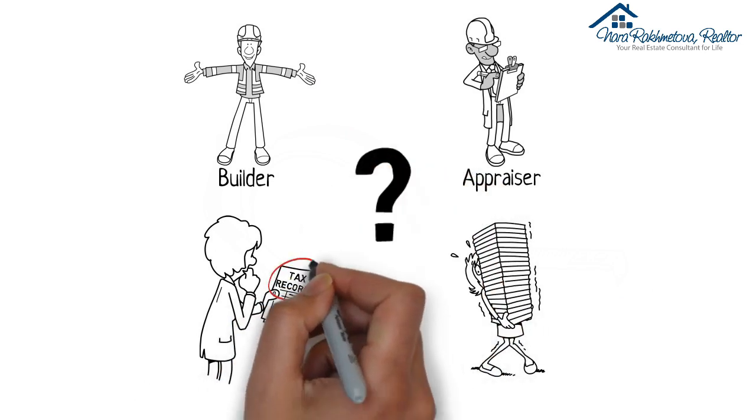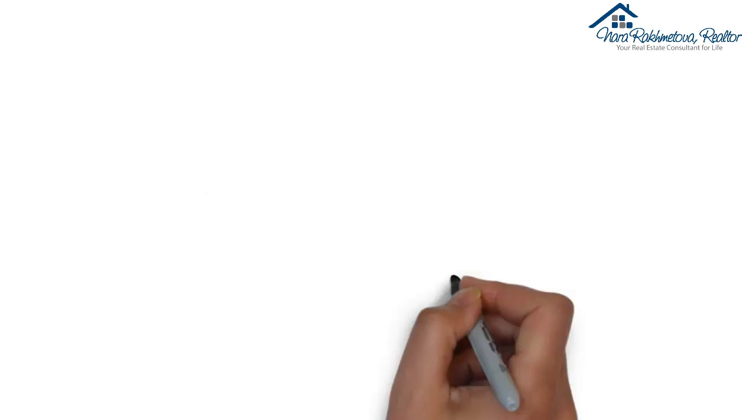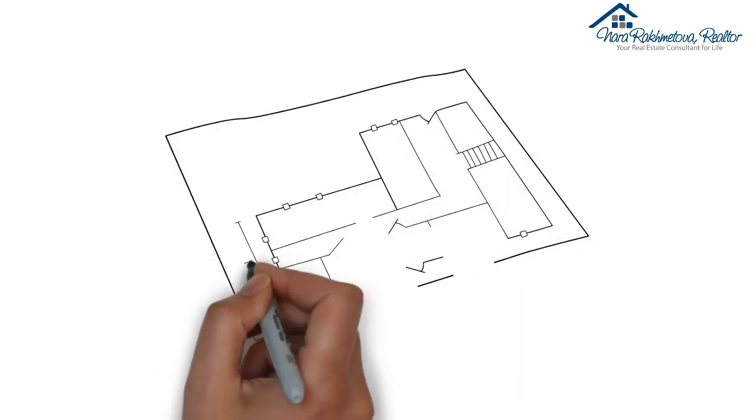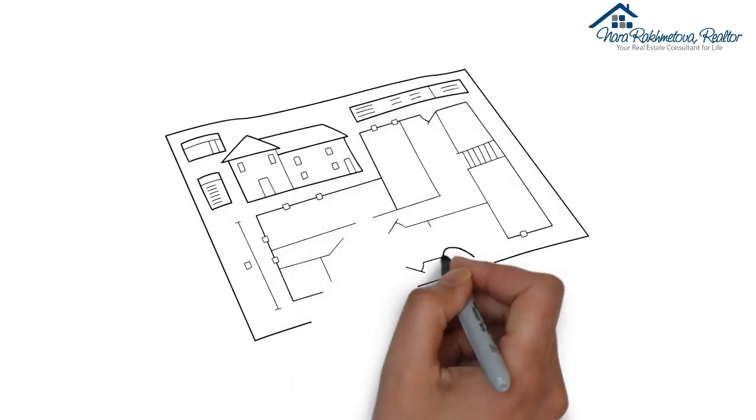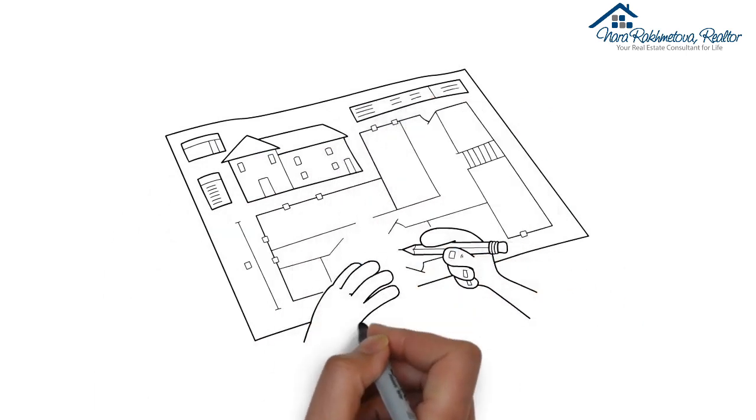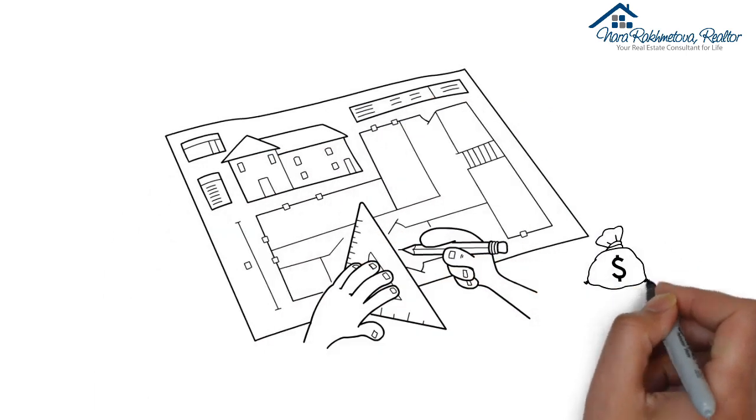The official figure is the one listed in the tax records. Any other figure must be documented by a builder's floor plan, an appraisal, or an official floor plan prepared by a company for a fee.